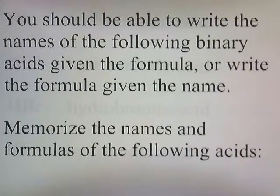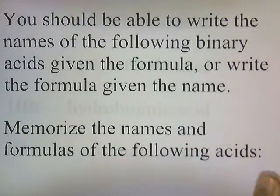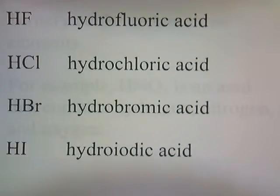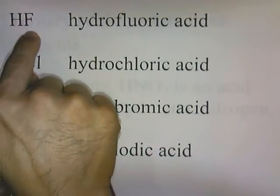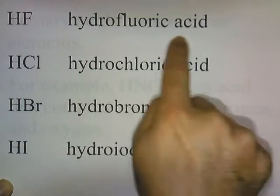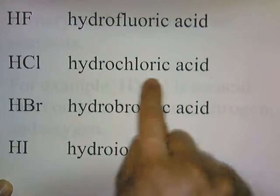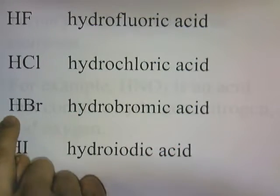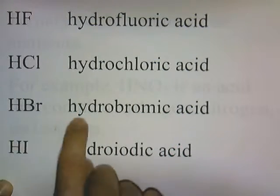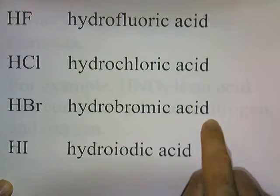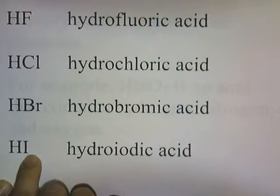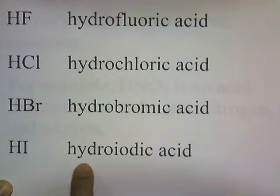You should be able to write the names of the following binary acids given the formula, or write the formula given the name. Memorize the names and formulas of the following acids: HF, which contains fluorine, is hydrofluoric acid. HCl, which contains chlorine, is hydrochloric acid. HBr, which contains bromine, is hydrobromic acid. And HI, which contains iodine, is hydroiodic acid.